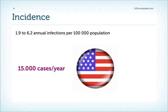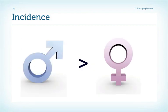It is quite difficult to determine the true incidence of endocarditis, and it also seems to vary from country to country. In the literature we find an incidence somewhere between 1.9 to 6.2 annual infections per 100,000 population, which translates into approximately 15,000 cases in the United States. The incidence increases with age and is more frequent in males versus females by a ratio of approximately 3:1 to 6:1.